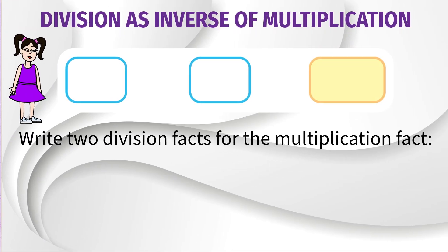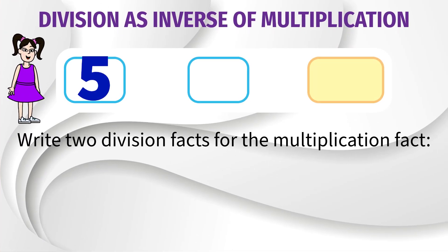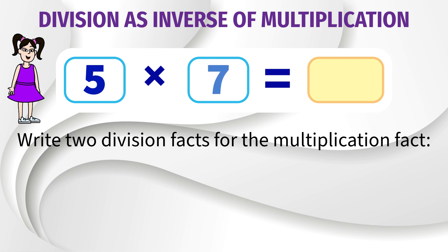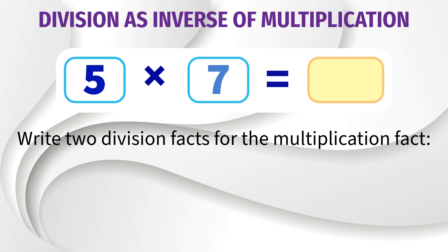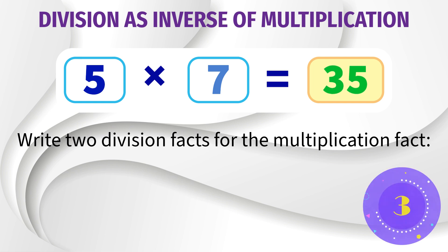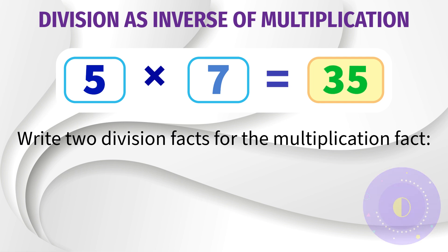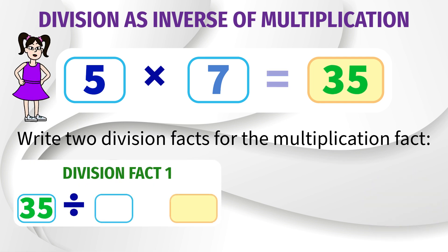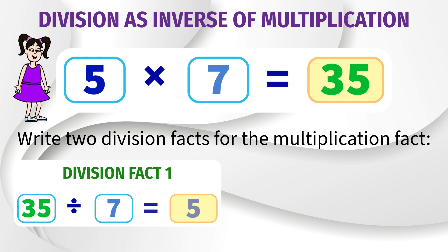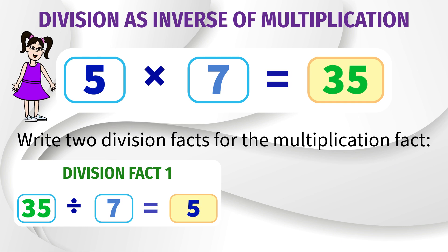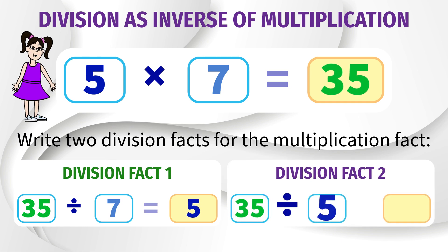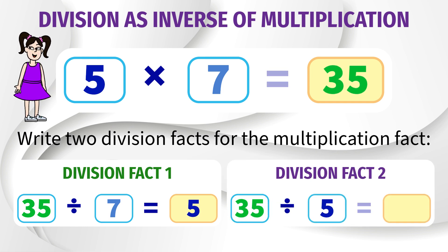Write two division facts for 5 into 7 equals 35. Here, the two division facts are 35 divided by 7 is 5, and 35 divided by 5 is 7.